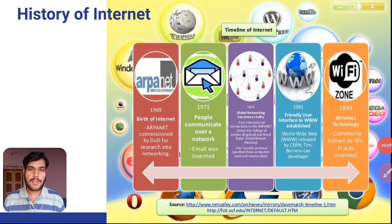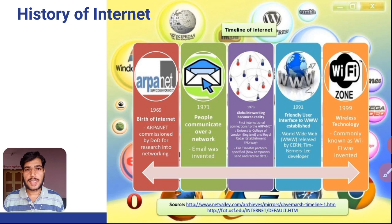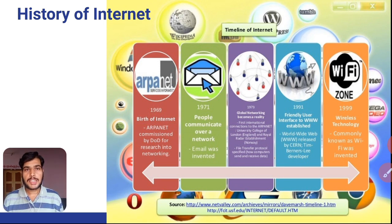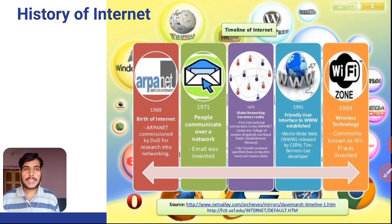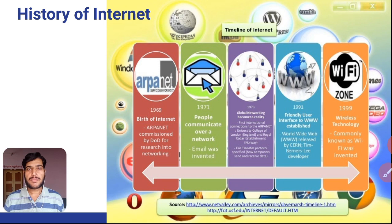In this slide, we are focusing on the history of Internet. Mainly, in 1969, it is the year of Internet, because ARPANET — which is also called the Advanced Research Project Agencies Network — was commissioned by the Department of Defense. It was doing research into networking and was a great success in 1969. In 1971, people started communicating with each other using email facilities. And in 1973, global networking became a reality, meaning people of one network were able to communicate with other networks — inter-networking succeeded in 1973.